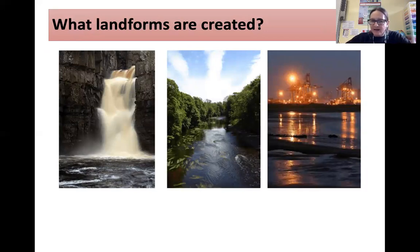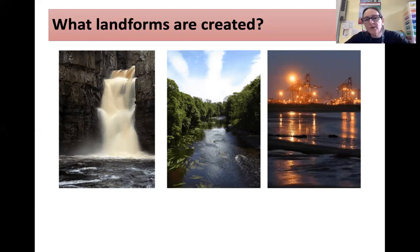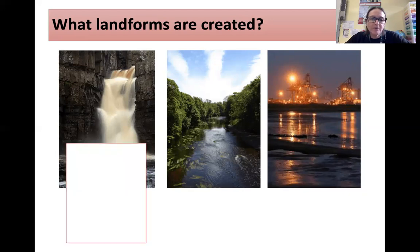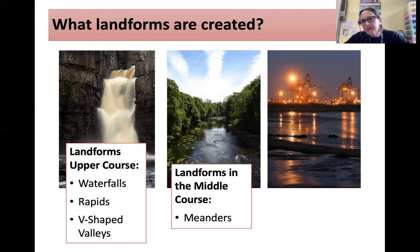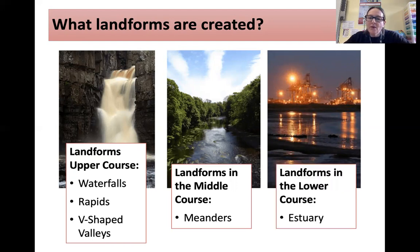So these are some of the landforms. This is the river going from the upper course all the way down to the lower course, where industry is located on the estuary at the mouth of the river. In the upper course, you've got waterfalls, rapids, and V-shaped valleys. As it flows into the middle course, you've got meanders, like the famous meander of Yarm. And then in the lower course, you've got the estuary.